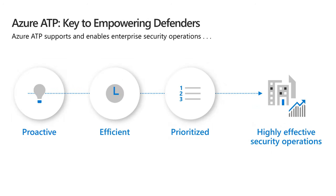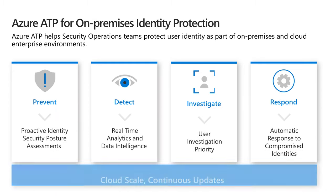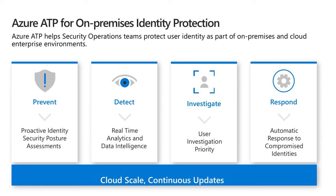Azure ATP is empowering security professionals while also helping you simplify the way you monitor and triage a potential threat. To do this, it starts with being proactive — time spent eliminating on-premises vulnerabilities helps to prevent attacks before they happen. Efficiency means protecting effectively by spending time on the greatest events and prioritizing real threats over false signals. This brings us to four different pillars: Prevent, Detect, Investigate, and Respond.